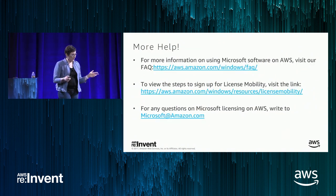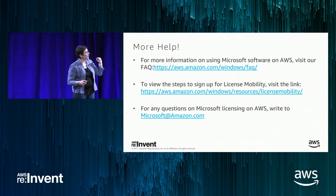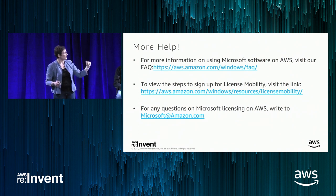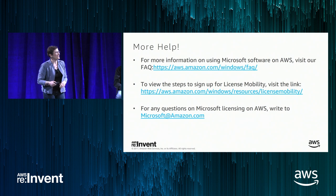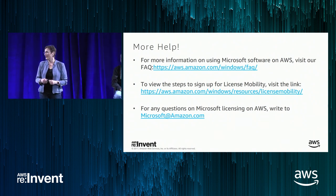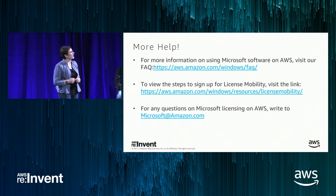To summarize: we talked about a lot of different ways in the last hour to optimize your licensing spend — combining BYOL and license-included across your architecture as Richard described, designing for the future to get applications modernized and more efficient, and those three programs to further help you optimize. Lots of resources available; the Microsoft at Amazon.com email is very responsive — Lance never goes to sleep — and we have solution architects to help as well.